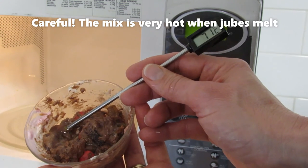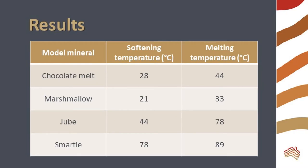In my experiment, the marshmallows and chocolate melted first, then the jubes. The hard coating of the Smarties began to break apart later, and then they melted. The results show that different model minerals softened and melted at different temperatures.